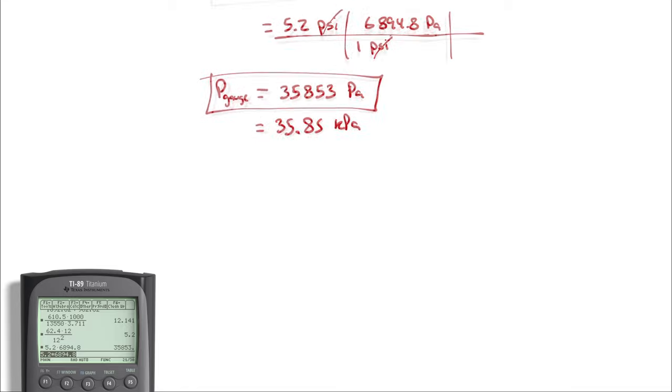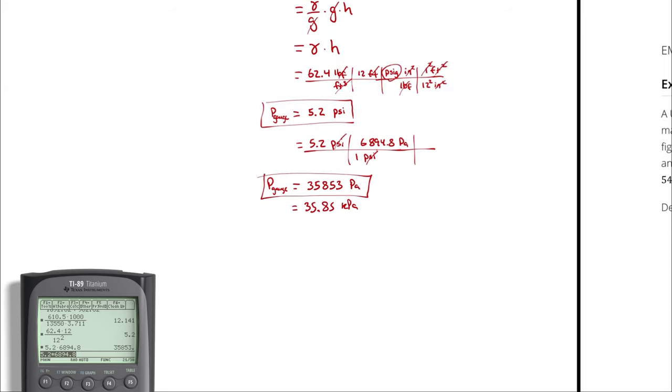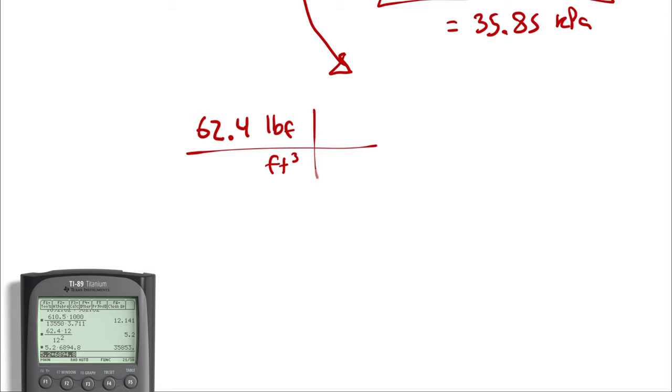And that conversion is perfectly valid. But what if we hadn't calculated the answer first in imperial? Just for character building, let's step back to this step. So we start off with what we had earlier, 62.4 pound of force per cubic foot, and we are multiplying by 12 feet, and we are trying to get to Pascals.